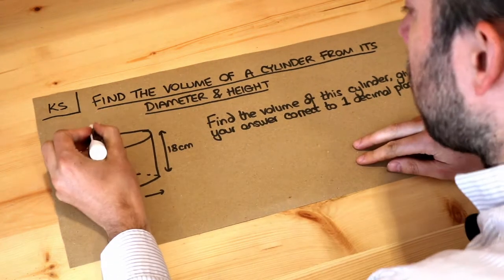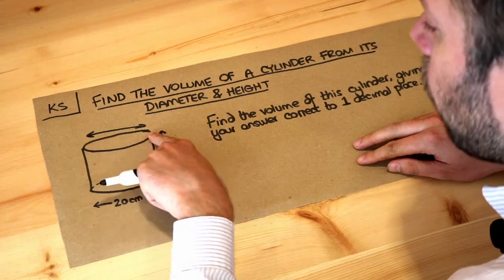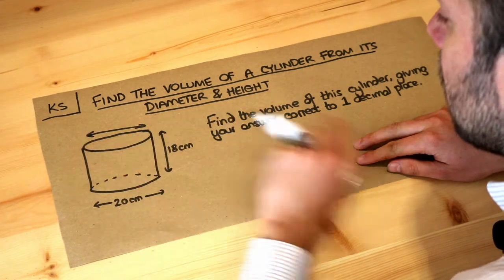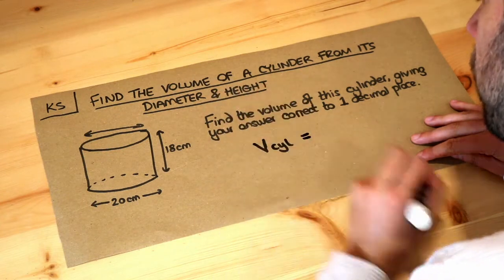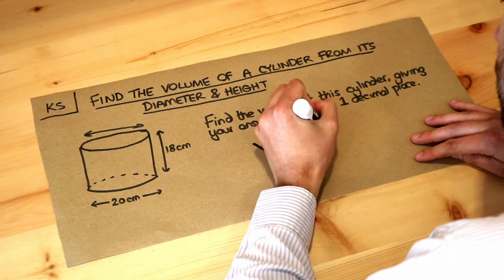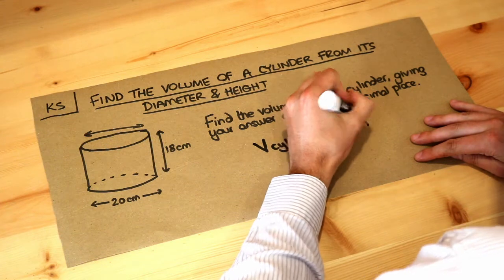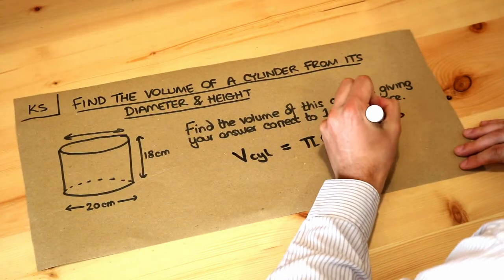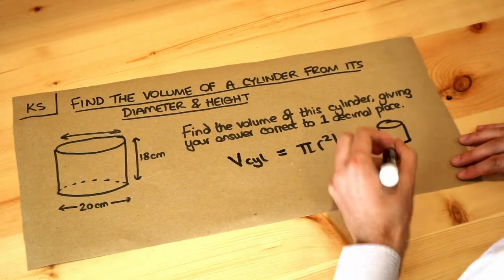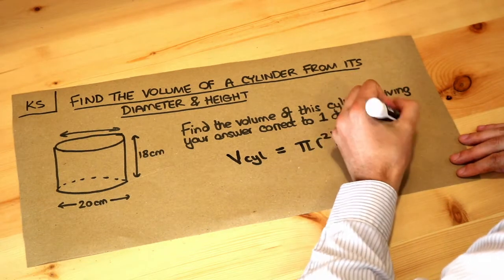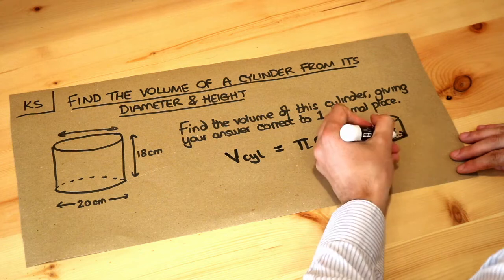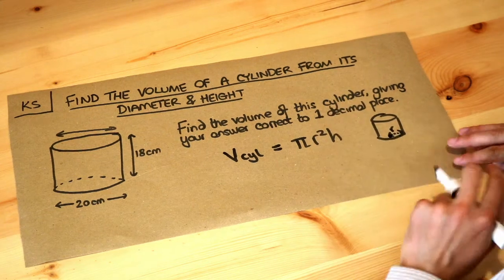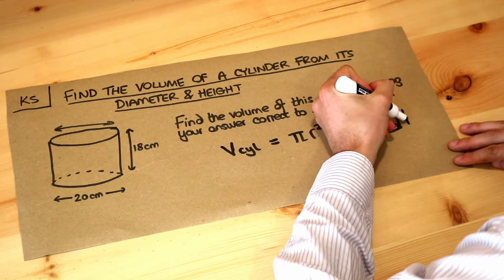Remember, the diameter of a circle is the line that goes all the way across the circle from one end to the opposite end. From the previous video, the volume of a cylinder is π r² h, where r is the radius of the cylinder—the distance from the center of the circle to the edge—and h is the height of the cylinder.